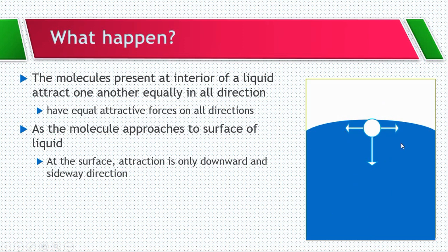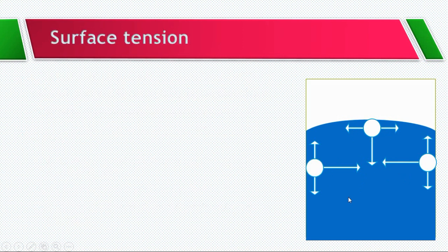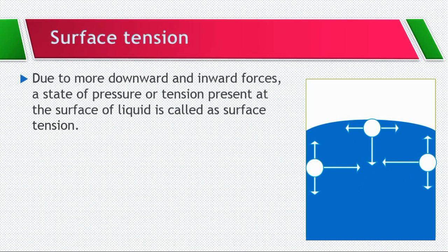You can see in the diagram how only downward and sideway attractive forces are working on such a molecule. As upward forces are reduced, the downward and inward forces increase and the molecule tries to go into the liquid. Due to more downward and inward forces, a state of pressure or tension is generated at the surface of the liquid. This pressure or tension which is present at the surface of the liquid is called surface tension.